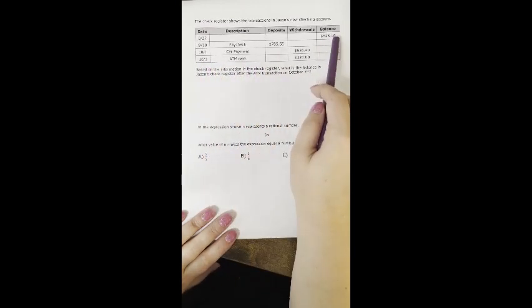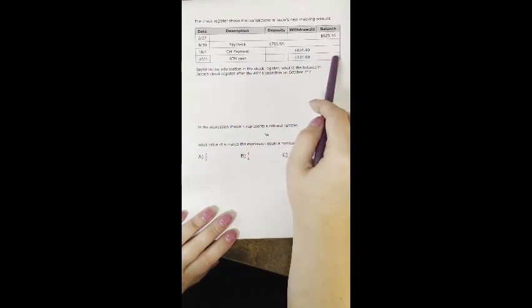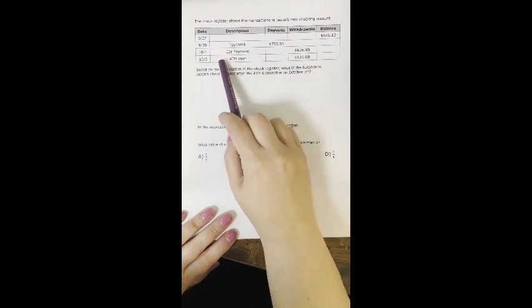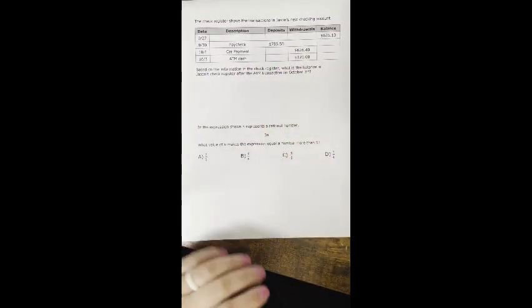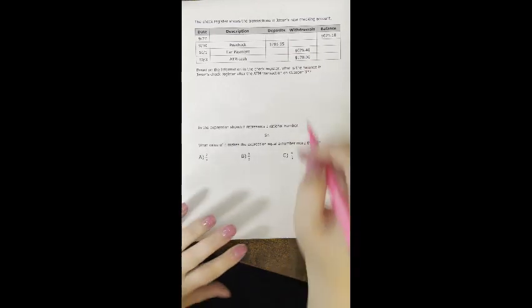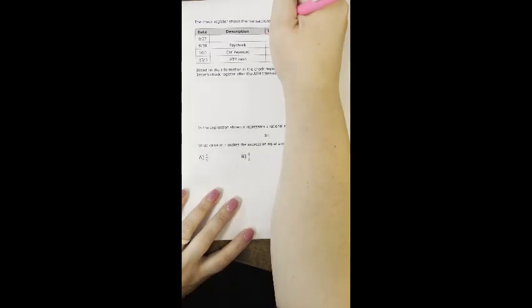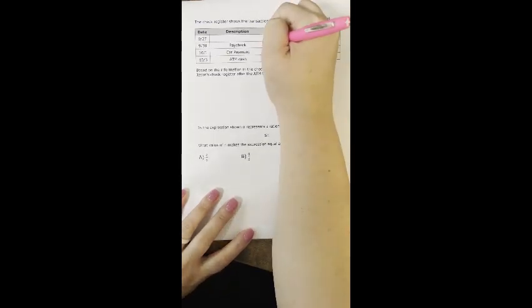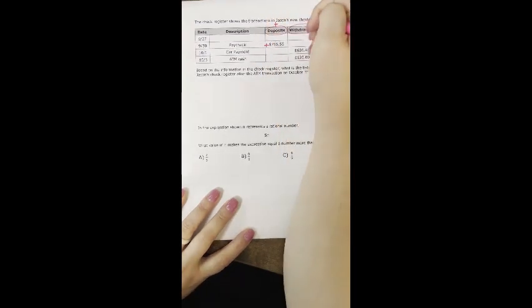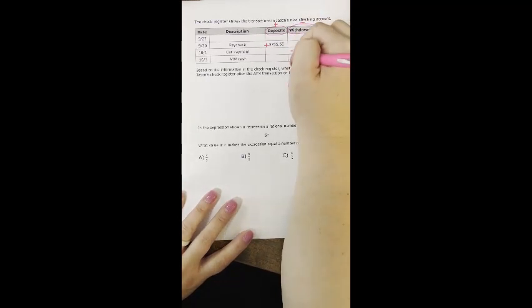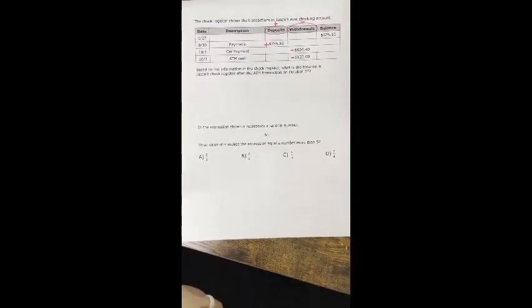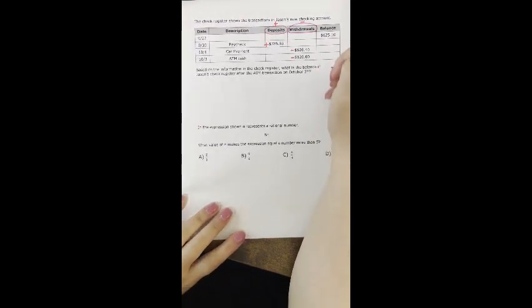Basically, we start with the balance and then deposit and withdraw, and they want to know what the balance is after this withdrawal. Keywords in this problem are deposit and withdraw — deposits are money we add to our account, so these are going to be positives or pluses, and withdrawals are negatives that we take away from our account. The rule for decimals is just to line them up. So I'm going to start with my balance of $625.10.